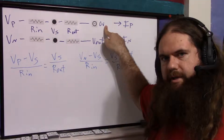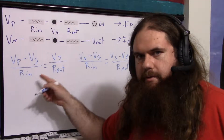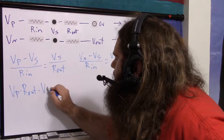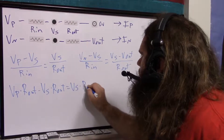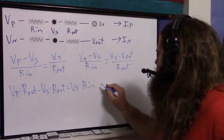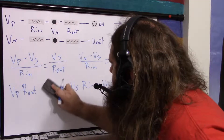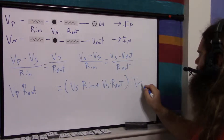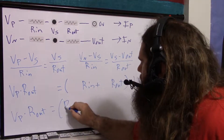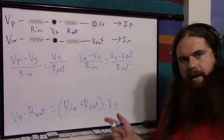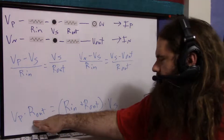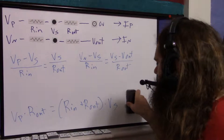Starting with the first equation (no feedback term), multiply through by R_in and R_out to clear fractions: vp·R_out − V_s·R_out = V_s·R_in. Bringing the V_s terms together: vp·R_out = (R_in + R_out)·V_s. So (R_in + R_out)·V_s = vp·R_out. Remember this result — we'll use it in a moment.